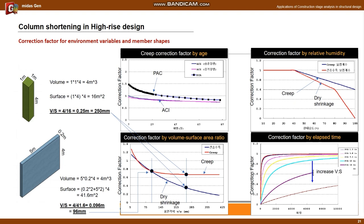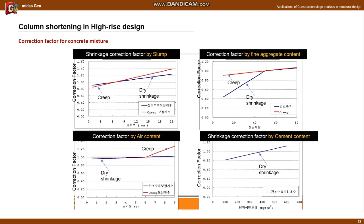The last graph is the correction factor by elapsed time. Next is the correction factor according to concrete mixture. The larger the slump radius, fine aggregate content, air content, and cement content, the higher the correction factor value, which means it causes larger creep and shrinkage strain.